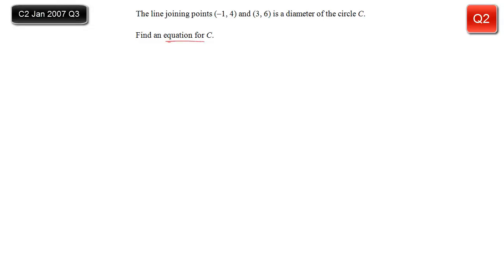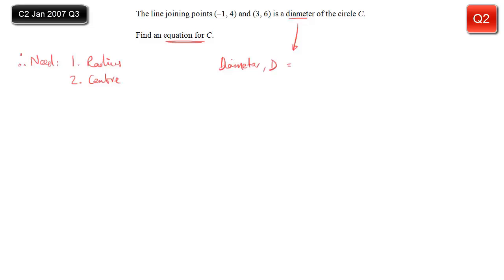In this question, we're given two points and told they are the endpoints of a diameter of a circle, and we want the equation of that circle. We'll need two things: the radius and the centre. Starting with the radius — we know the line joining the two points is the diameter, so we can find its length using the distance formula based on Pythagoras.